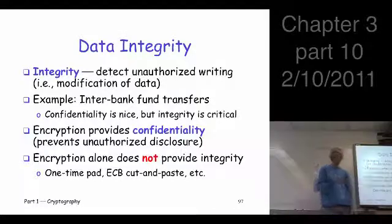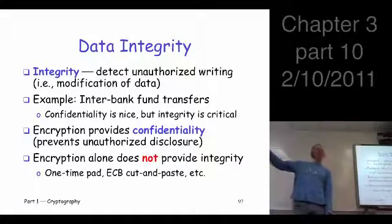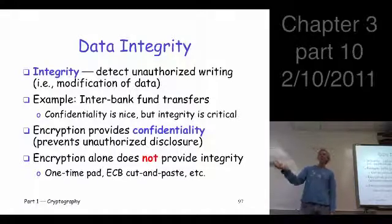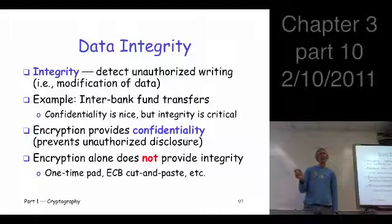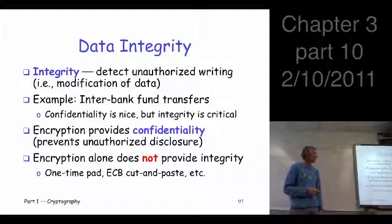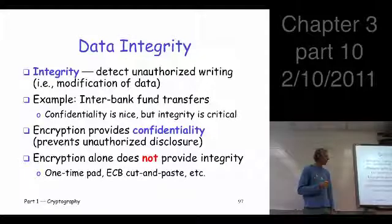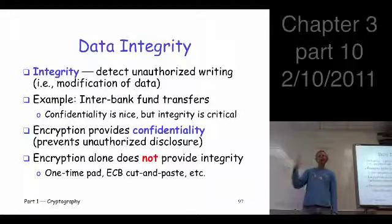Here's an example. Suppose you have banks transferring funds — the Federal Reserve Bank of New York and the Federal Reserve Bank of Chicago transferring $10 billion. It's probably public record that they transfer this money, so confidentiality is really not a big issue. But integrity is a big issue — you don't want to transfer $1 billion or $100 billion, you want to get the amount right. So integrity in practice is really important, and this is crucial: encryption, all that confidentiality stuff, does not guarantee integrity.